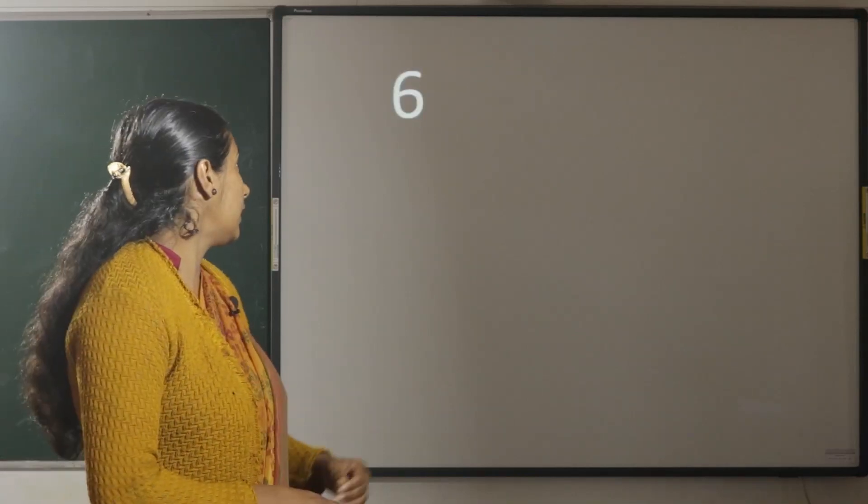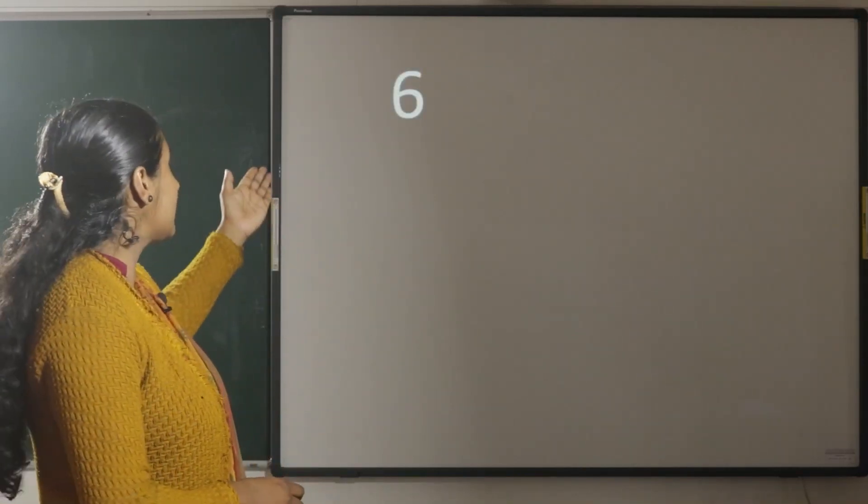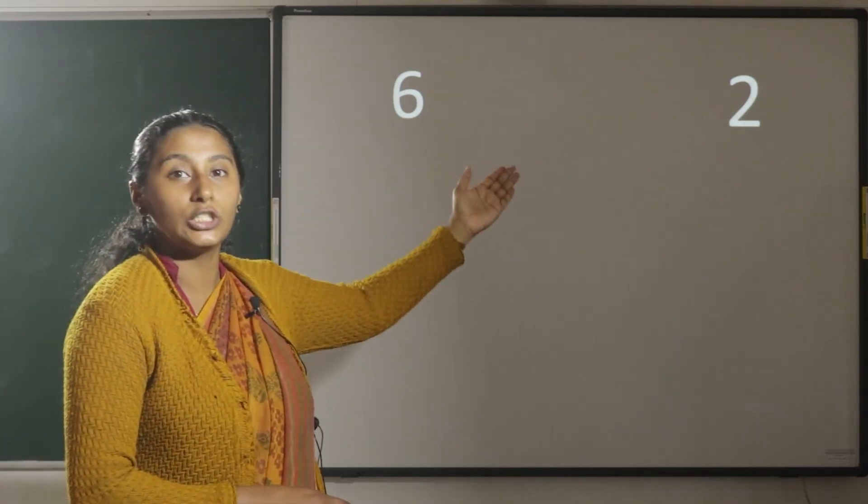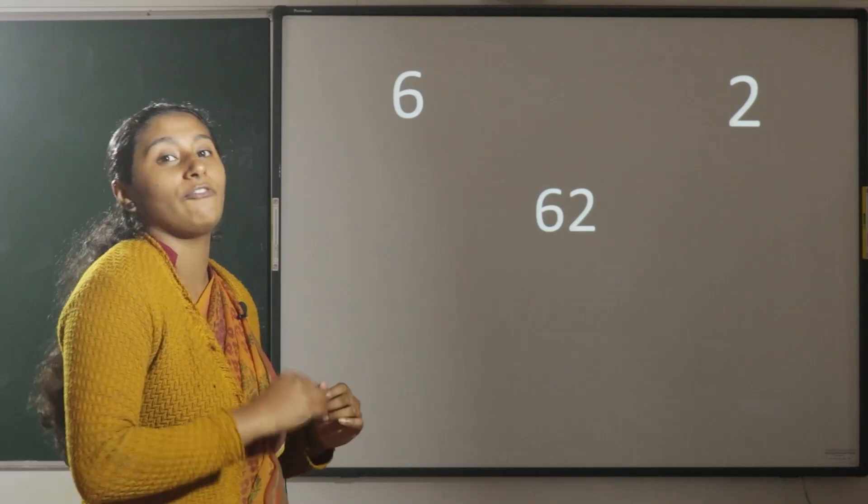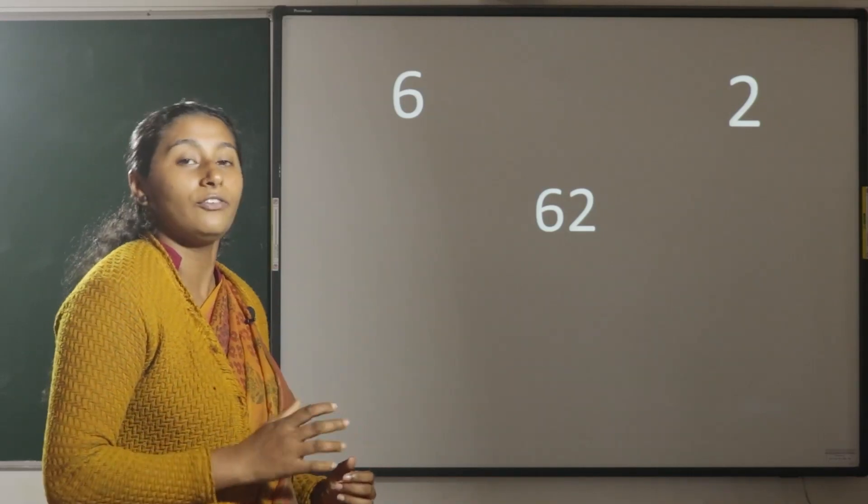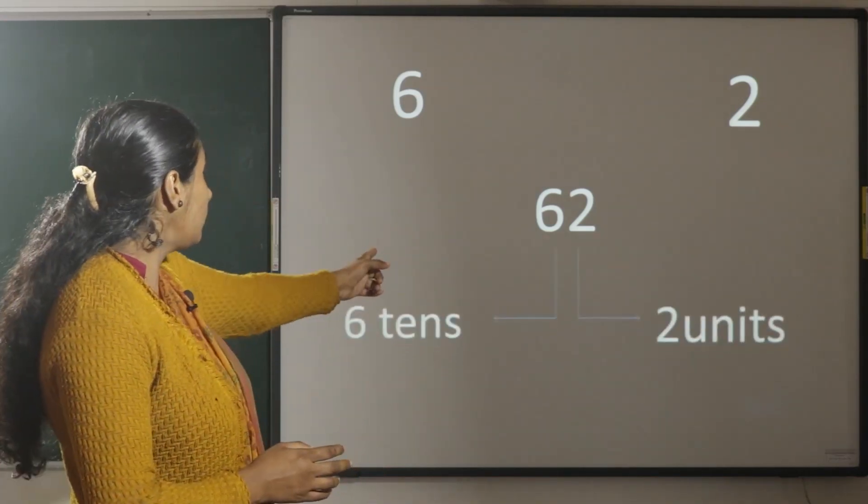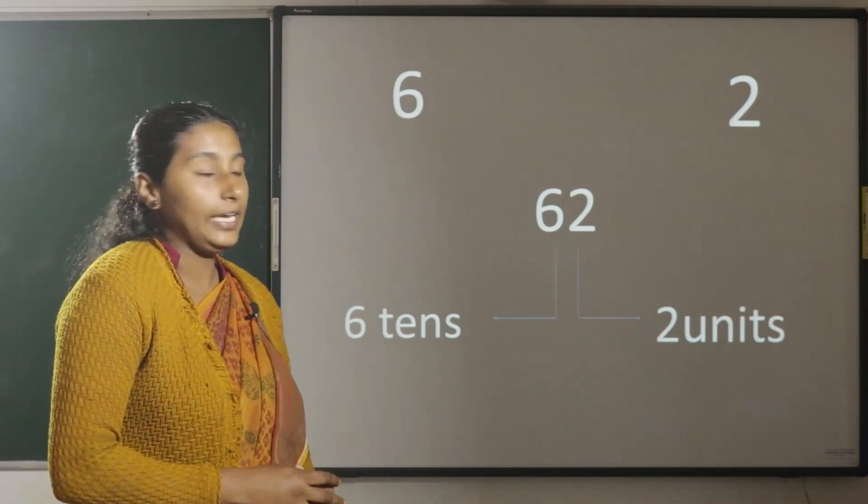Okay, children. Here is the number 6 and the number 2. When these numbers come together, the value of the number will change. Now, 62.